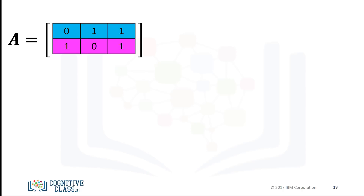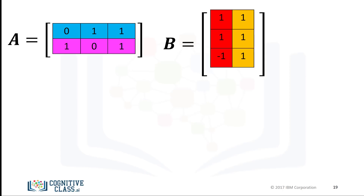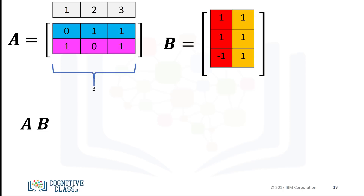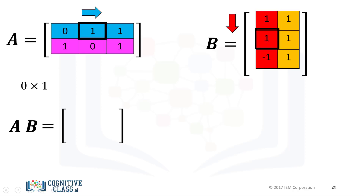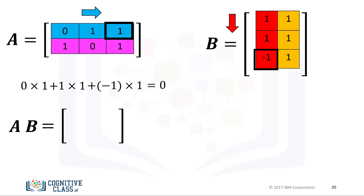We can also perform matrix multiplication with NumPy arrays. Matrix multiplication is a little more complex, but let's provide a basic overview. Consider the matrix A, where each row is a different color, and the matrix B, where each column is a different color. In linear algebra, before we multiply matrix A by matrix B, we must make sure that the number of columns in matrix A — in this case 3 — is equal to the number of rows in matrix B, also 3. To obtain the i-th row and j-th column of the new matrix, we take the dot product of the i-th row of A with the j-th column of B. For the first row and first column, we take the dot product of the first row of A with the first column of B. The result is zero.